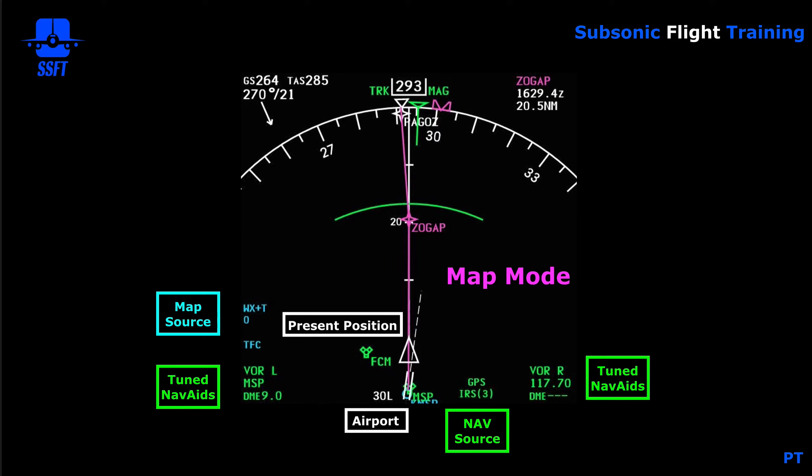Just below that are two NAVAIDs. These are the NAVAIDs coming from your NAVRAD page — from the L1 area and the R1 area of the NAVRAD page. These are the NAVAIDs being automatically tuned by the FMC, or manually tuned if you were to enter a NAVAID.